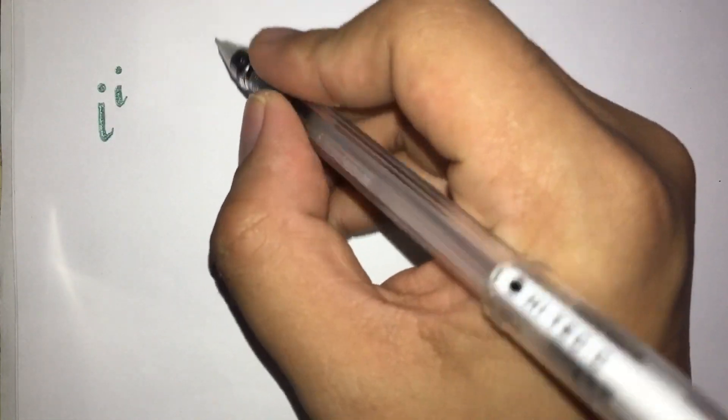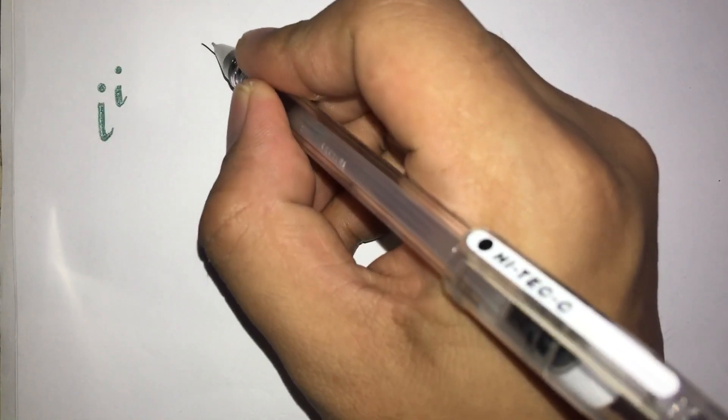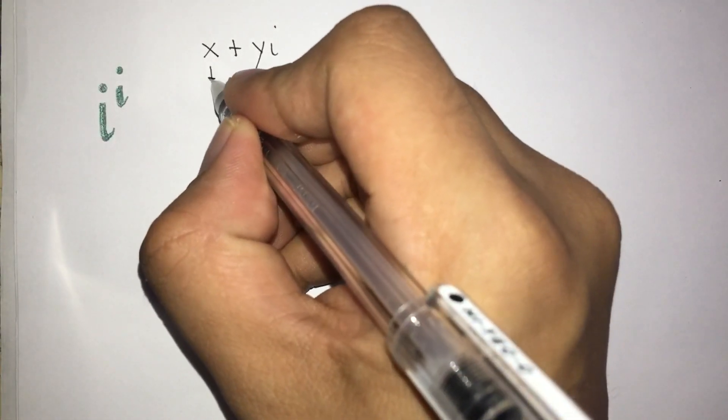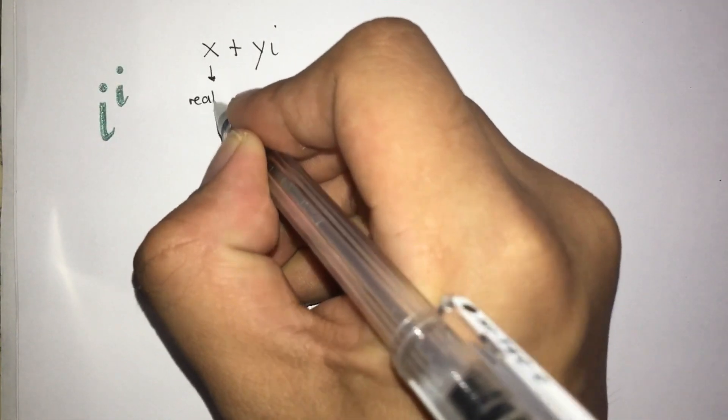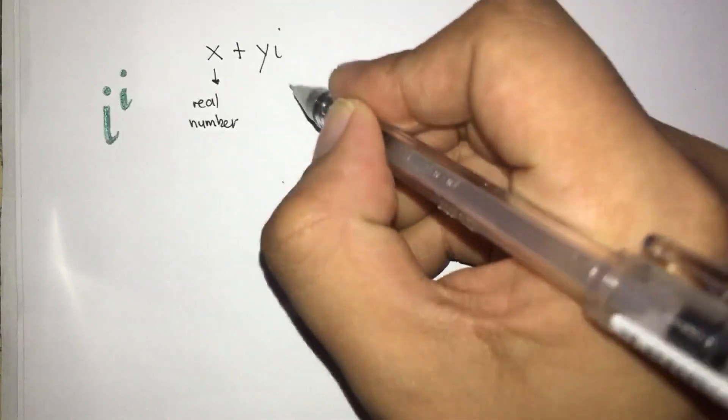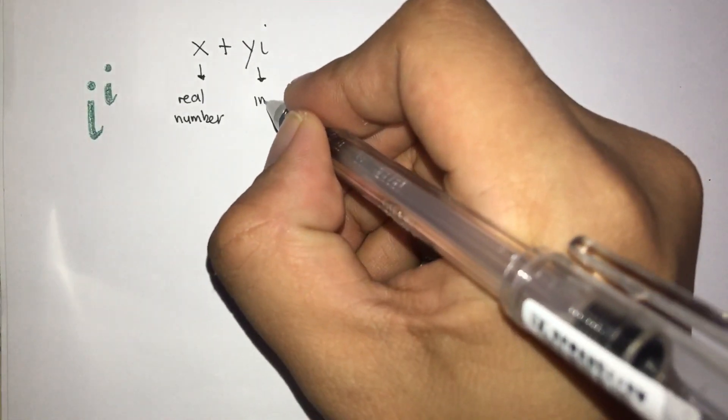In order for us to solve this type of problem, we must first know the different representations for complex numbers. The first one is basically in the form x plus yi, where x represents the real number and y represents the imaginary number.